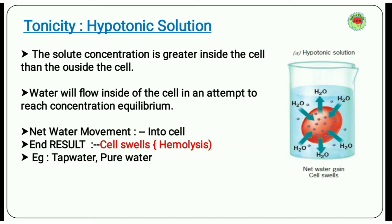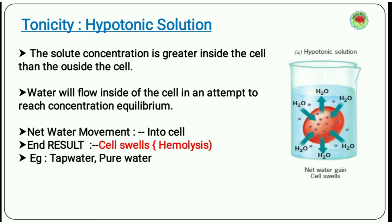Water will flow inside the cell because solute cannot move, so water from outside comes in, causing the cell to swell up. The net water movement is into the cell, and the result is the cell swells up through the process of hemolysis. Examples of hypotonic solutions include tap water and pure water.